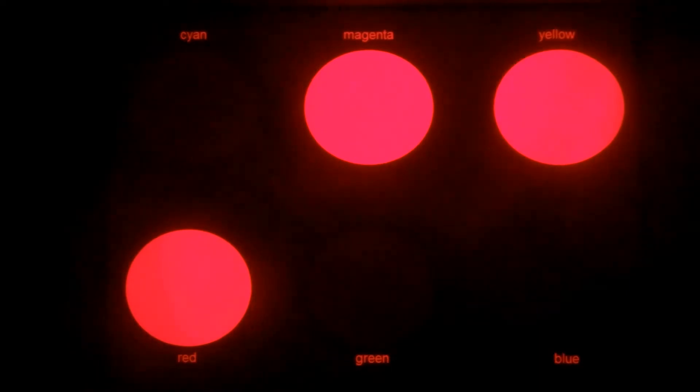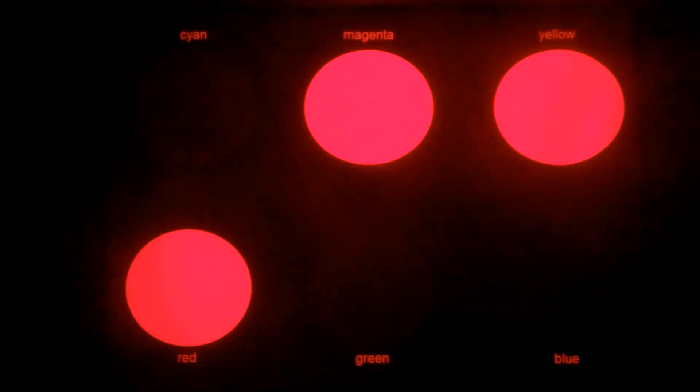So the red, the magenta, and the yellow appear red, but the cyan, the green, and the blue appear black.